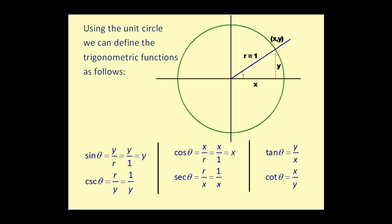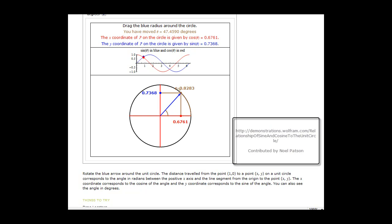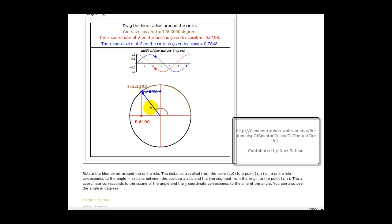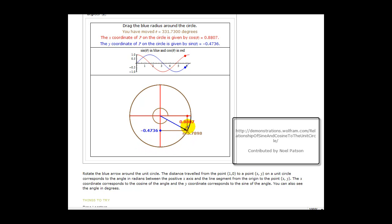Here's a useful visualization of the unit circle: for any angle that intersects the unit circle, the x-value equals cosine theta and the y-value equals sine theta. You can also see the reference triangles formed with the x-axis. Since we know r equals one, we only need the x and y-coordinates.